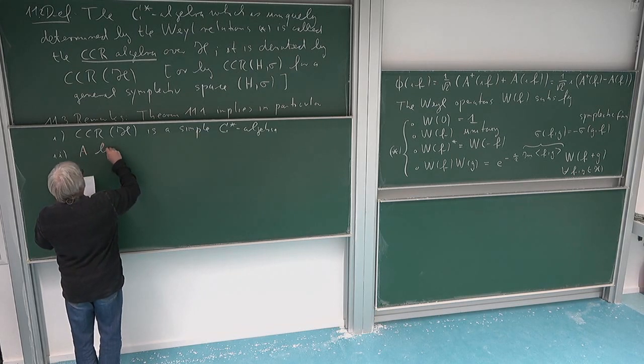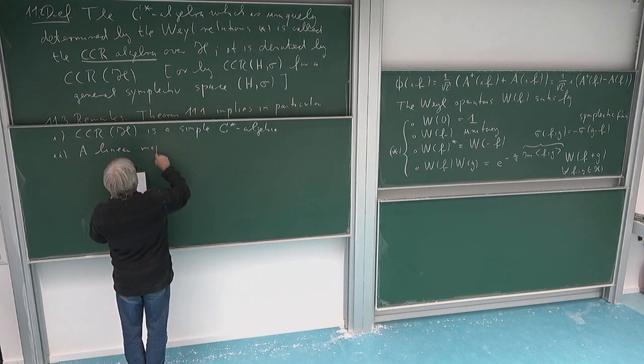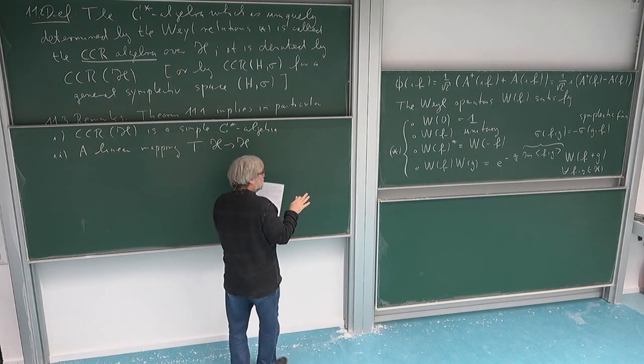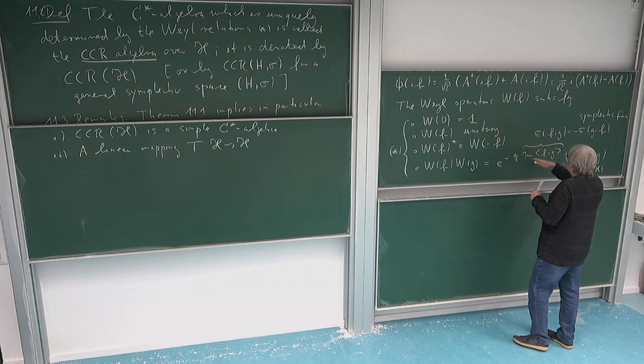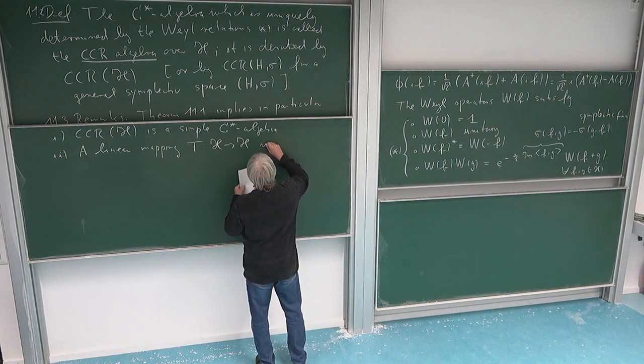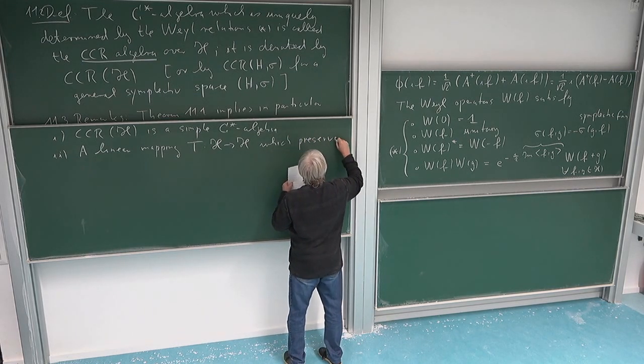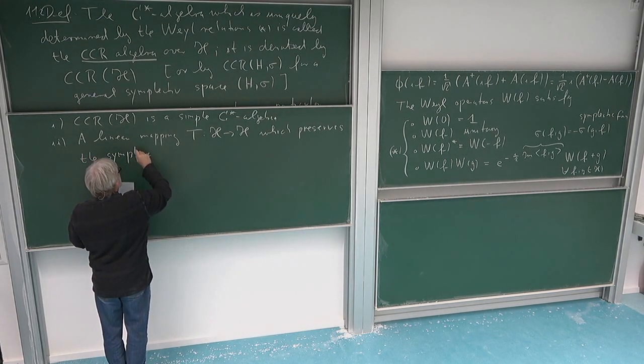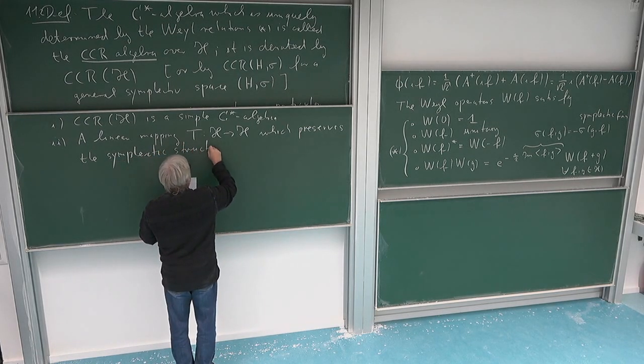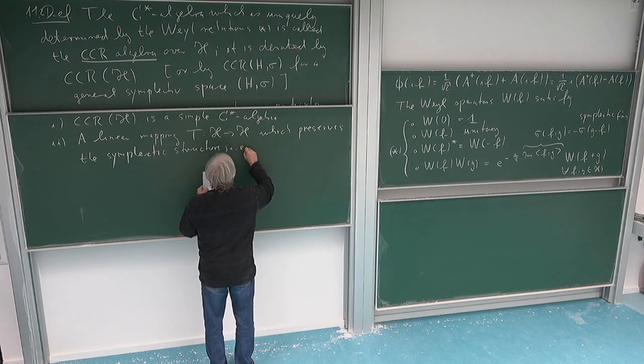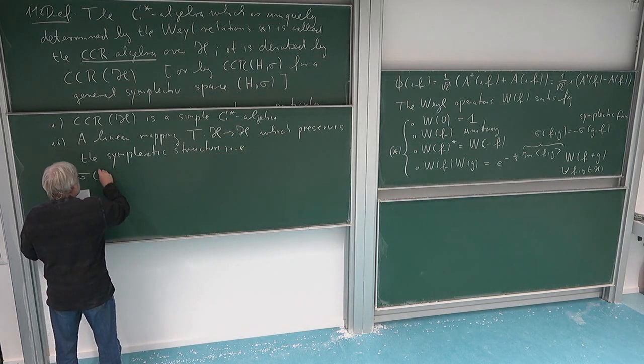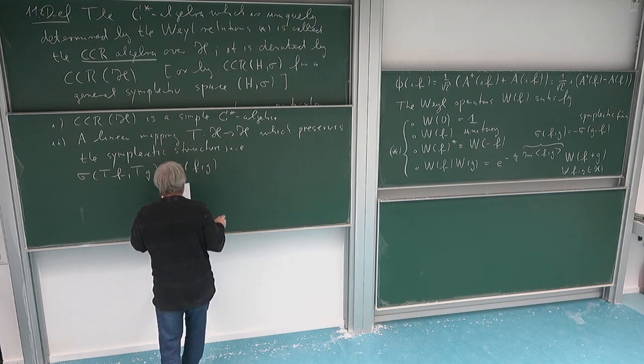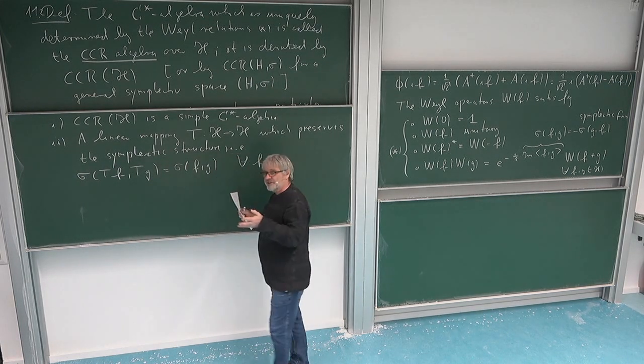So if I have a linear mapping on the level of the underlying Hilbert space, a linear mapping T from H to H, which preserves the only information about the Hilbert space which is showing up here in the Weyl relations. So a mapping T which preserves the symplectic structure. With this I just mean that sigma of Tf, Tg is sigma of f, g for all f and g. So T is an isometry on the underlying Hilbert space.